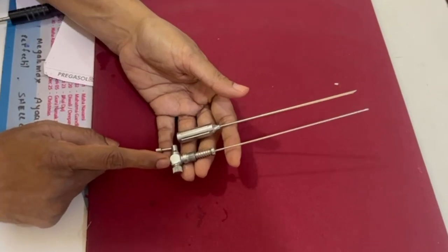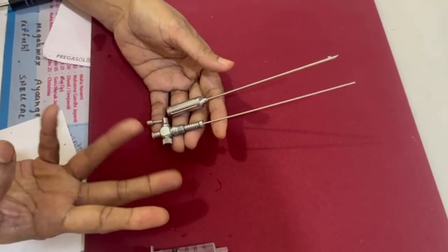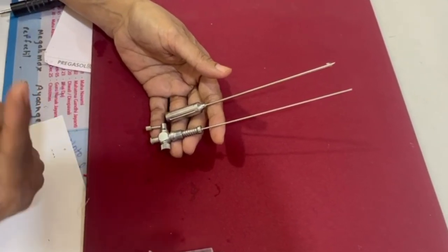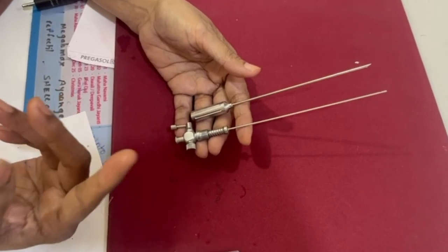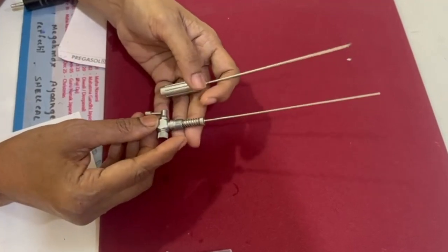This is the Veress needle. It is available in three sizes: 12 centimeter, 10 centimeter, and 8 centimeter. 12 is for the obese abdominal wall and 8 is for thin ladies. The parts: this is the outer one.